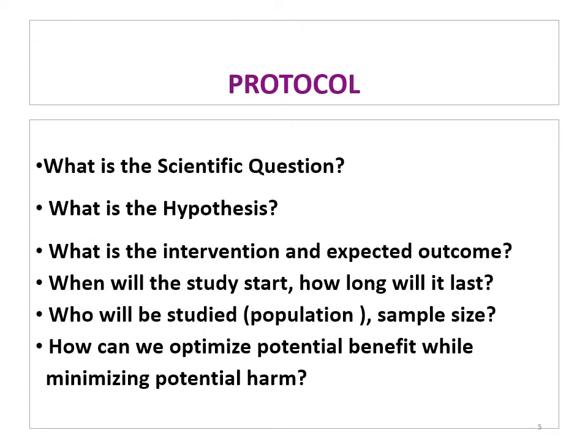When writing the protocol, ask yourself: What is the scientific question? What is the hypothesis? What do I need to prove or disprove? What is the intervention? What is the expected outcome? When will the study start and how long will it last? Who is the population? From where will you collect data? What is the sample size? And how can we optimize potential benefit while minimizing potential harm? Minimizing harm is one of the main ethical considerations when conducting any trial — you cannot eliminate harm, but you can minimize it, and the IRB must know exactly what you have done to do so.